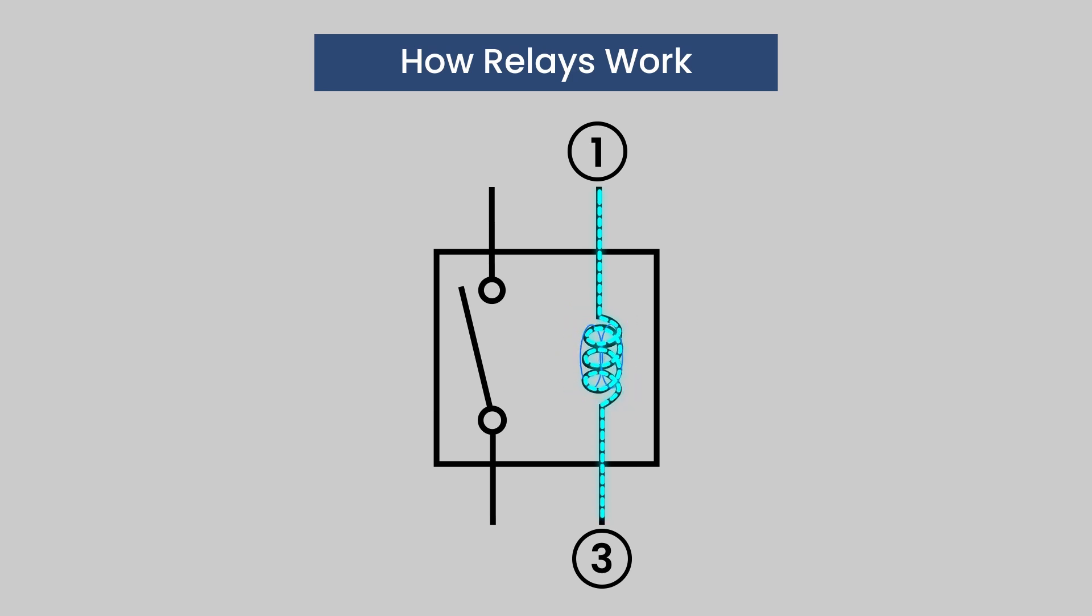This causes the switch, which is in pins two and four, to close and a larger current to flow through those pins. A relay becomes de-energized when the current flowing to the control circuit stops and the magnetic field stops.